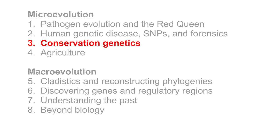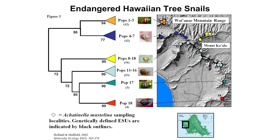Section 3: Conservation Genetics. So far we've largely focused on issues directly concerning humans. What about non-human genetic markers and non-human evolution? The field of conservation genetics is an interdisciplinary field of study that looks at how to conserve the diversity of life by understanding evolution and genetics.